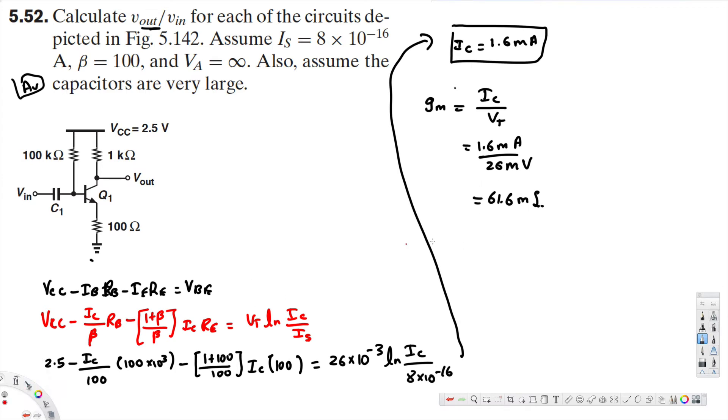Now we have the transconductance, so we can calculate the voltage gain A_V. A_V is given by minus R_C divided by (1 over g_m plus R_E).